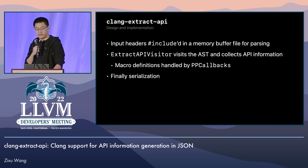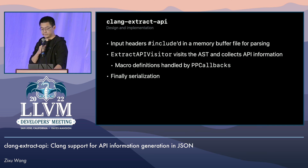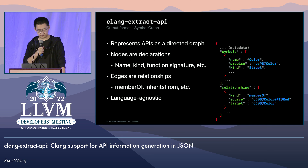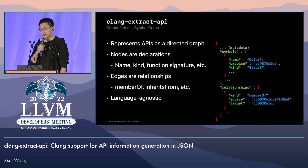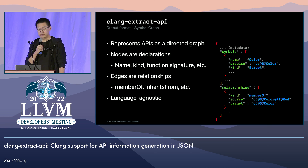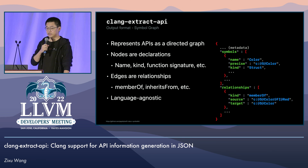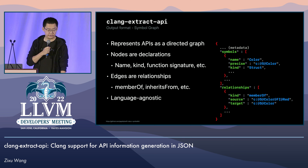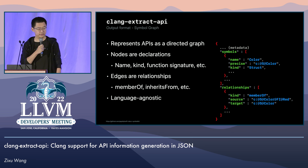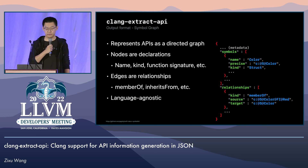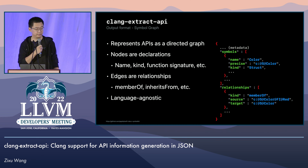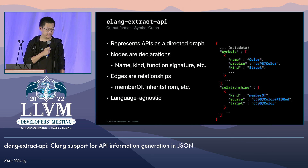Currently, we have an implementation of the serializer for the symbol graph format. The symbol graph format models API symbols as a directed graph. In this graph, nodes are symbol declarations — for example, here you can see the struct Color with all its associated information. And edges in the graph are relationships between symbol declarations — for example, it shows that the field red is a member of the struct Color.